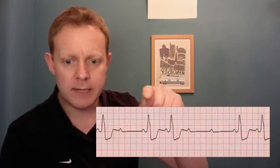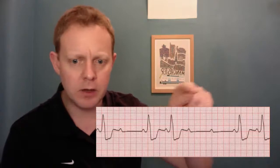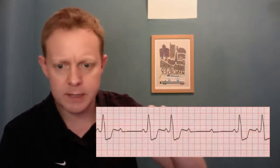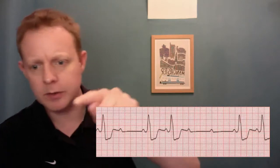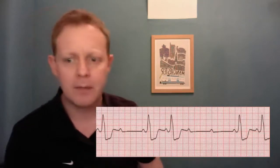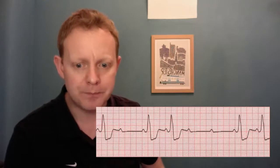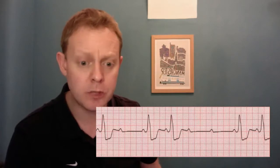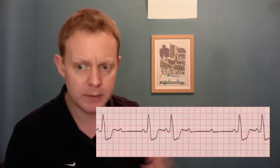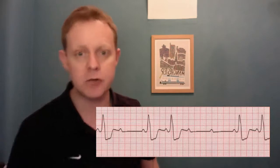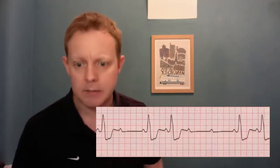But we have these irregularities because we've got a long pause there, and then at the other side another long pause just here. So: regularly irregular. There's a broad QRS complex — we'll come back to that later when we look at the 12-lead ECG to try and explain it.